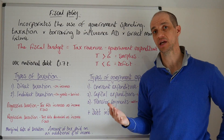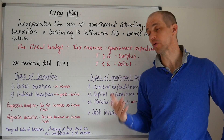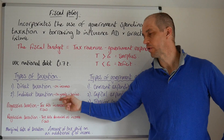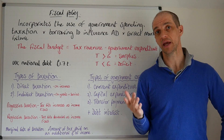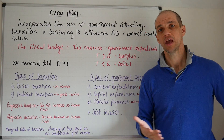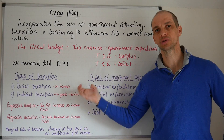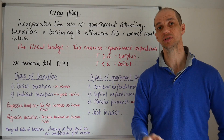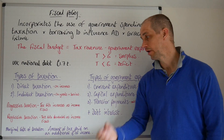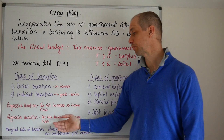There's also regressive taxation, where the tax rate decreases as income rises. Indirect taxes are often cited as an example of regressive taxation. Why? Because if you're spending 20% extra on non-essential goods that someone from a low-income household needs to purchase, that additional 20% represents a far higher proportion of their overall disposable income. So that's a useful point to bear in mind.